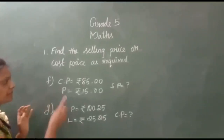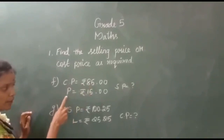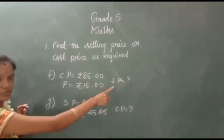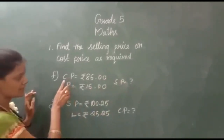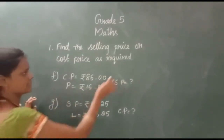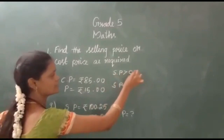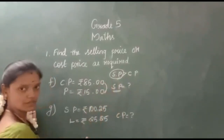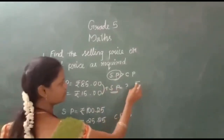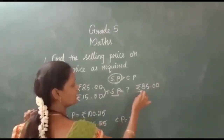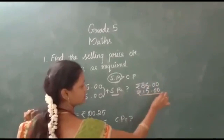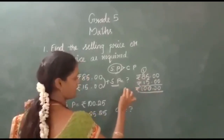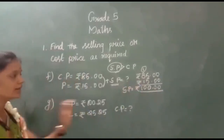Let's see some more exercises. Cost price is 85 rupees, profit is 15 rupees. Here we are going to find the selling price. We are going to apply the same rule. Since profit means selling price will be greater and cost price will be lesser, the amount every day is greater, so we use the addition operation. 85 rupees plus 15 rupees — if we add these two numbers, we will get 100 rupees as the answer. So selling price is equal to 100 rupees.